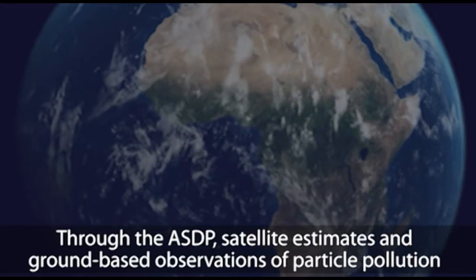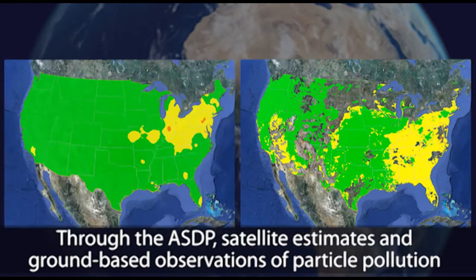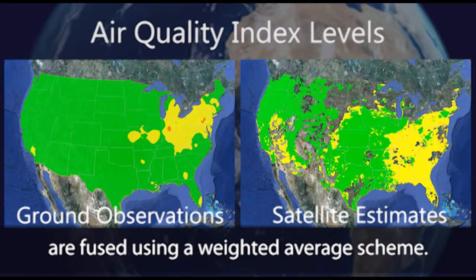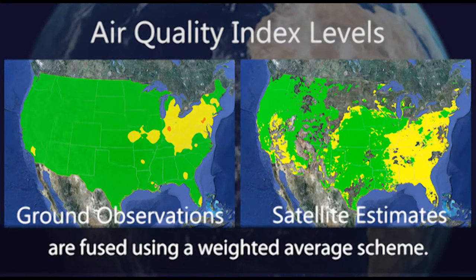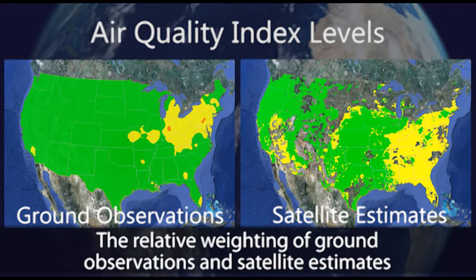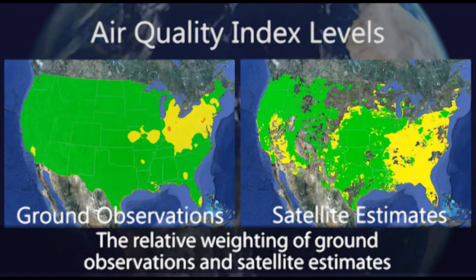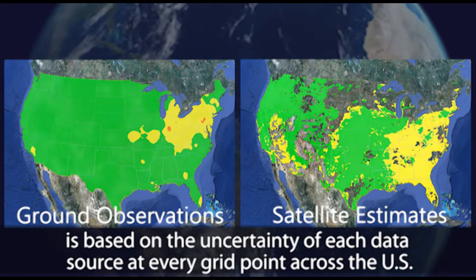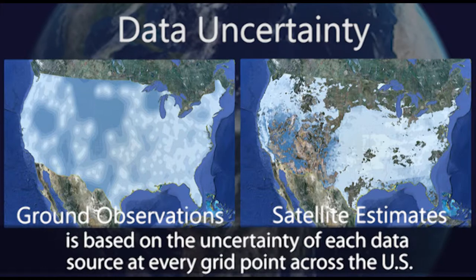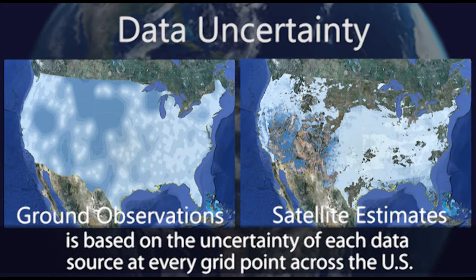Through the ASDP, satellite estimates and ground-based observations of particle pollution are fused using a weighted average scheme. The relative weighting of ground observations and satellite estimates is based on the uncertainty of each data source at every grid point across the U.S.